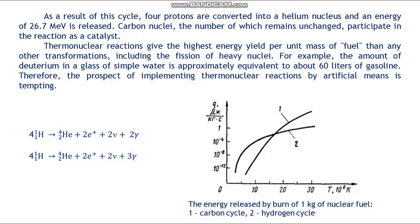Thermonuclear reactions give the highest energy yield per unit mass of fuel of any transformation, including the fission of heavy nuclei. For example, the amount of deuterium in a glass of simple water is approximately equivalent to about 60 liters of gasoline. Therefore, the prospect of implementing thermonuclear reactions by artificial means is very tempting.